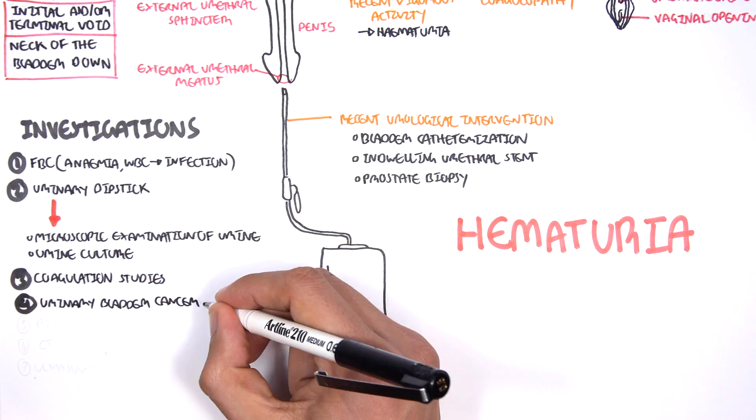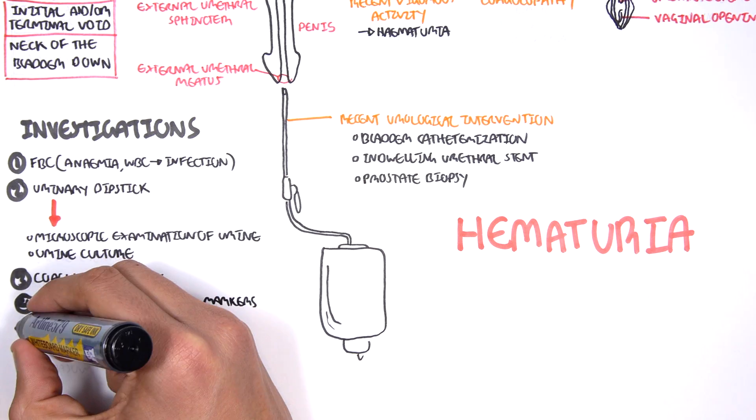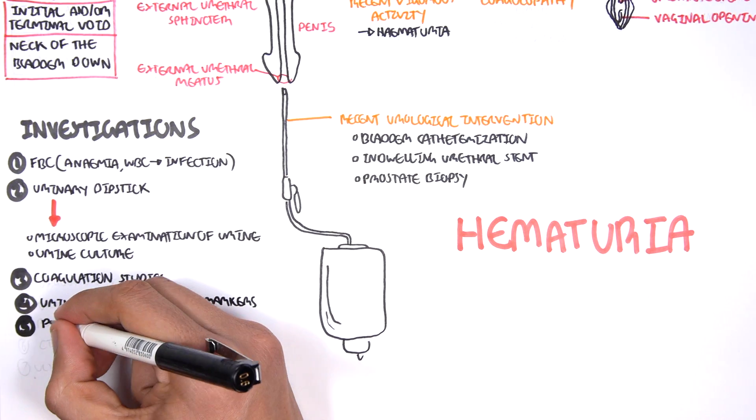You can also perform a urinary bladder cancer marker. Usually people at the age of 40 who present with hematuria, you should always rule out cancer of the bladder because this is often how cancer of the bladder presents, and it's most often in people over the age of 40. And then you can also do a PSA, and this is prostate-specific antigen. So this is a check for any BPH or any possible prostate cancer.